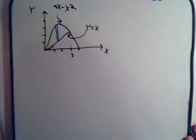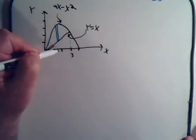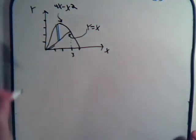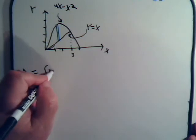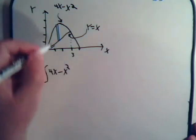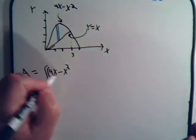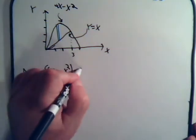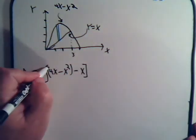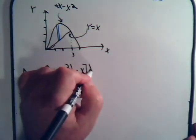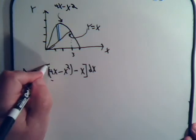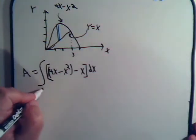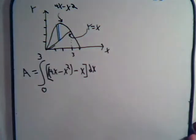And the height of this rectangle would be the height of this curve here minus the height of this curve here. So, the area will equal the integral, and the height is 4x minus x squared, that's the upper curve, minus the lower curve, that's x. So there's the height of our rectangle, multiplied by the width of the base, that's dx. And we want to add all of those up, starting at x equals 0 and going on out there to x equals 3. So that would be our integral.